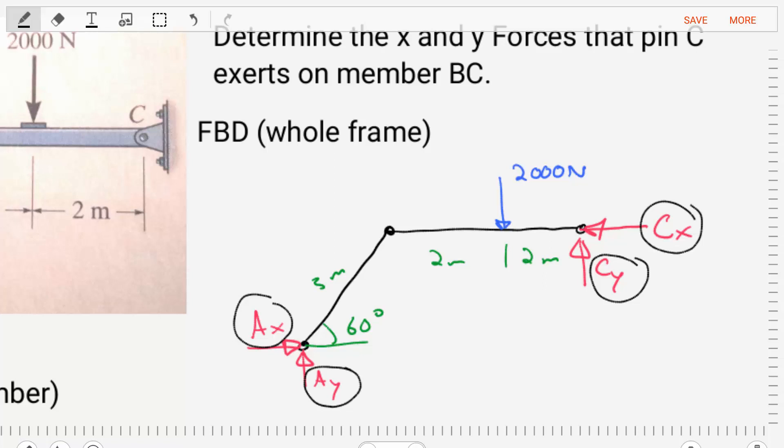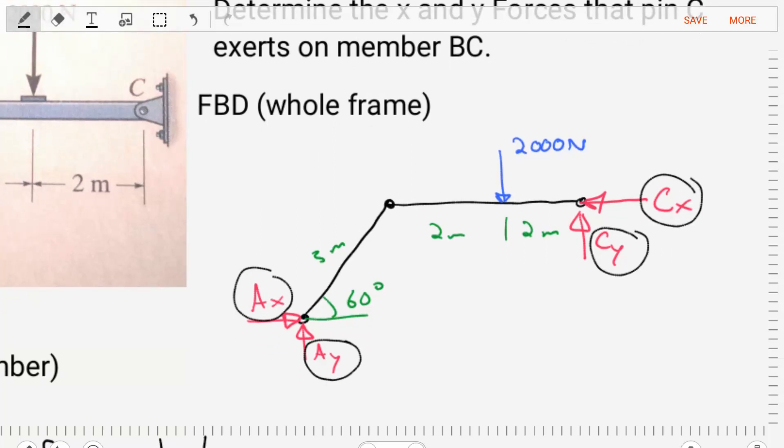And then we would put our dimensions and we would put our external loading. Now something to note, looking at this full free body diagram, there appear to be four unknowns in this diagram. And this is a 2D problem that allows us to only have three equations. So as is, we do not have enough equations to solve for all four of these unknowns.